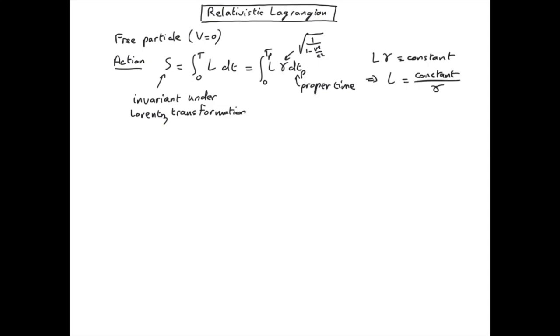Let's have a look at the units of this equation. So we know that the Lagrangian has units of energy. The gamma is unitless. Therefore our constant must have units of energy as well.